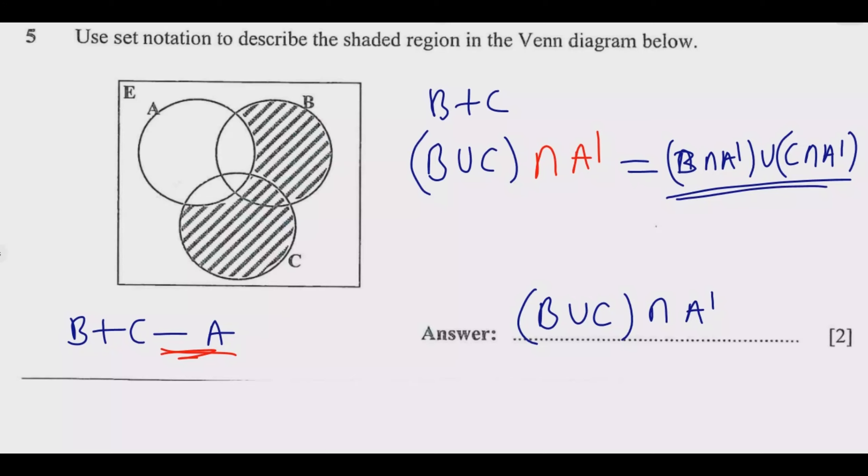But the one I've given you as a final answer, B union C in brackets intersection A complement, is a neater way. But they mean the same, except that the other one means what is in B, remove what is in A, then combine what is in C minus what is in A.